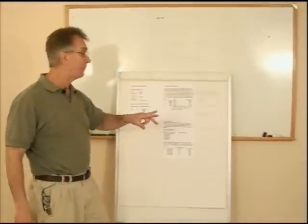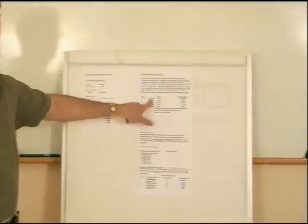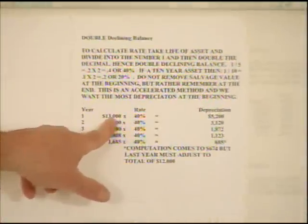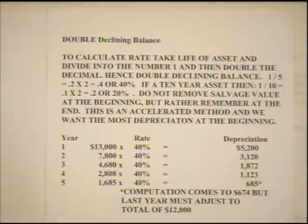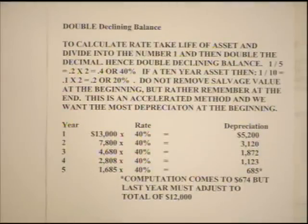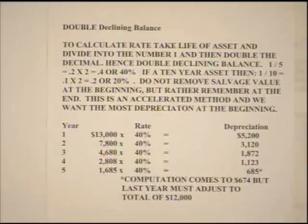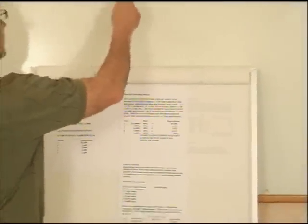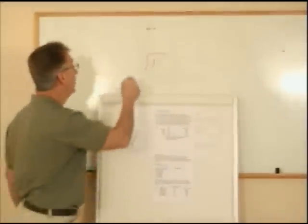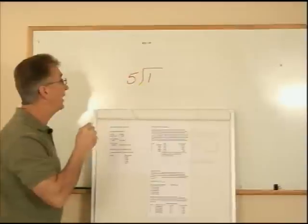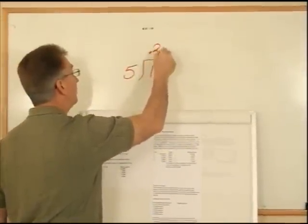To calculate the double declining balance, the one thing we get to do in year one is we get to start with the full $13,000. Therefore, right off the bat, we're starting with a larger number than that $12,000 number that we were under straight line. It is called double declining balance because we're going to double the rate. The whole key is you take the number one and put it in your calculator and divide it by the number of years you're depreciating this asset over. In this case, we would divide one by five and up in our calculator would pop .2.